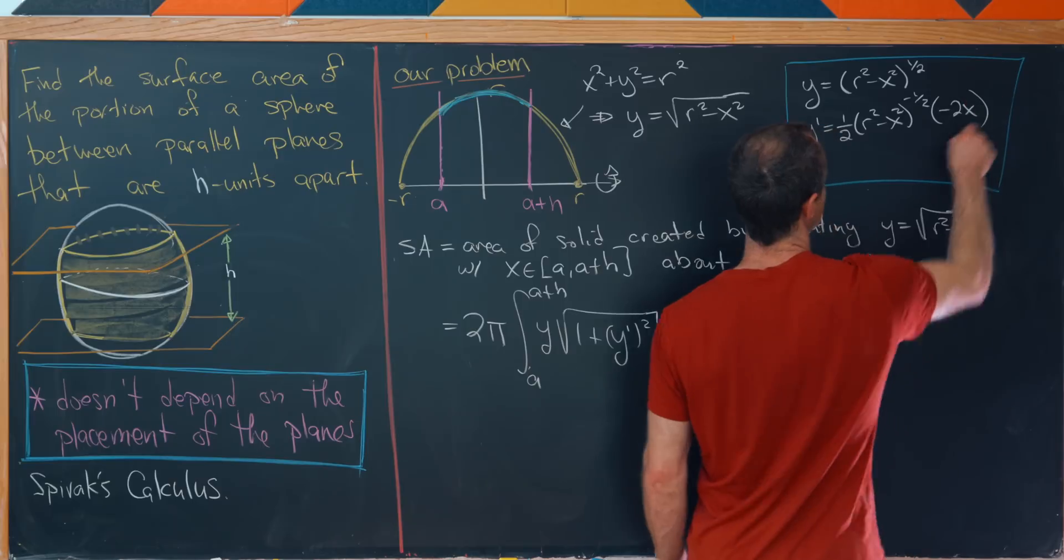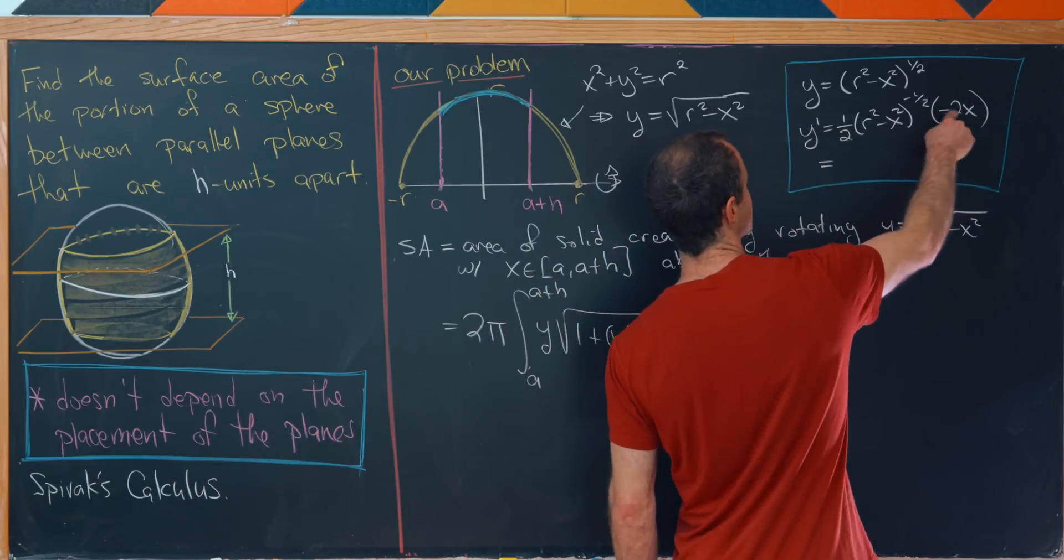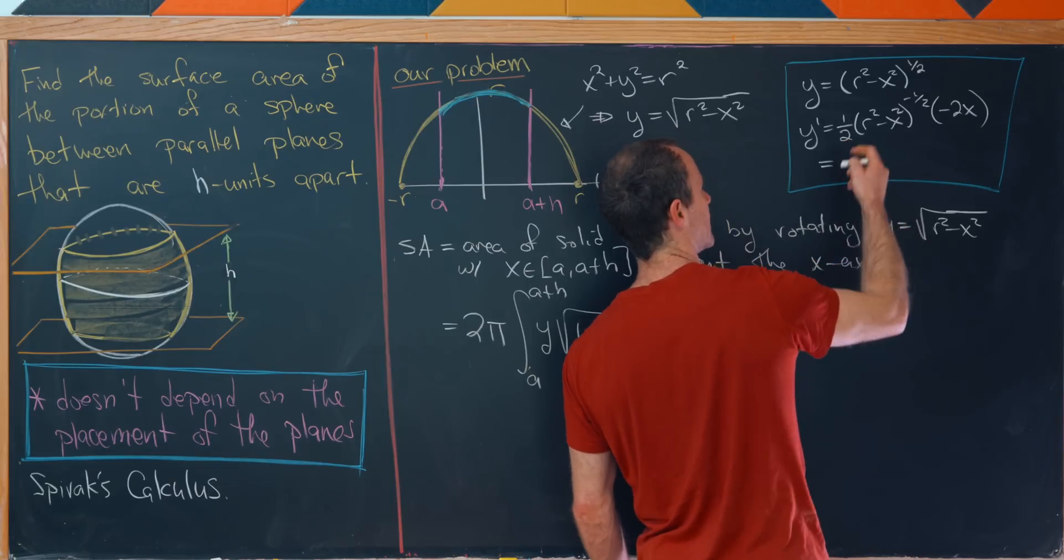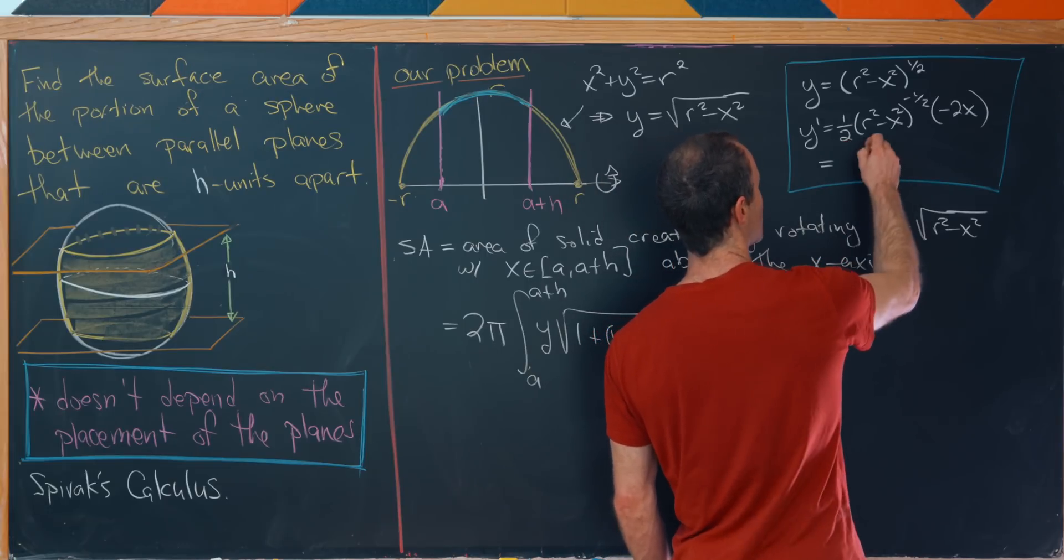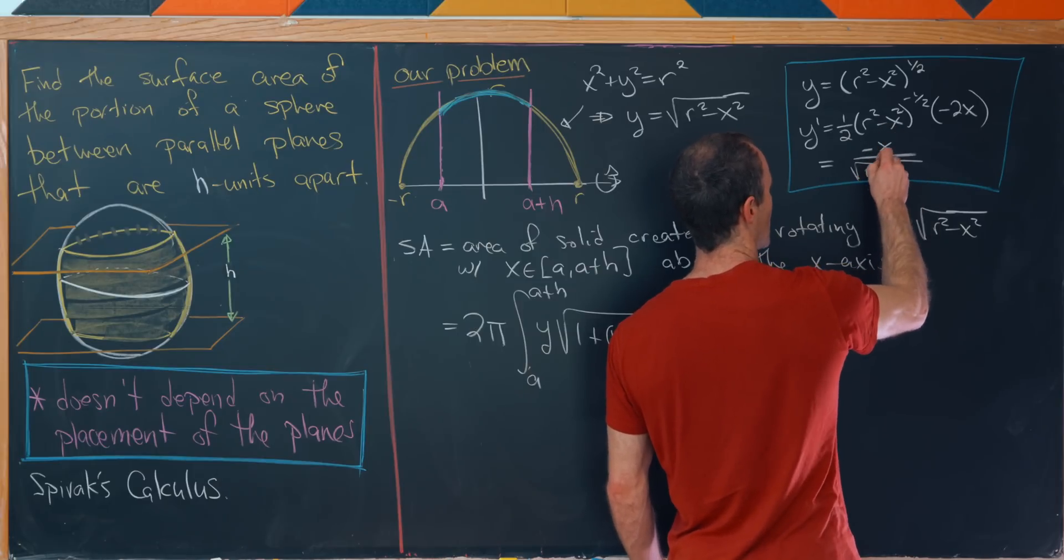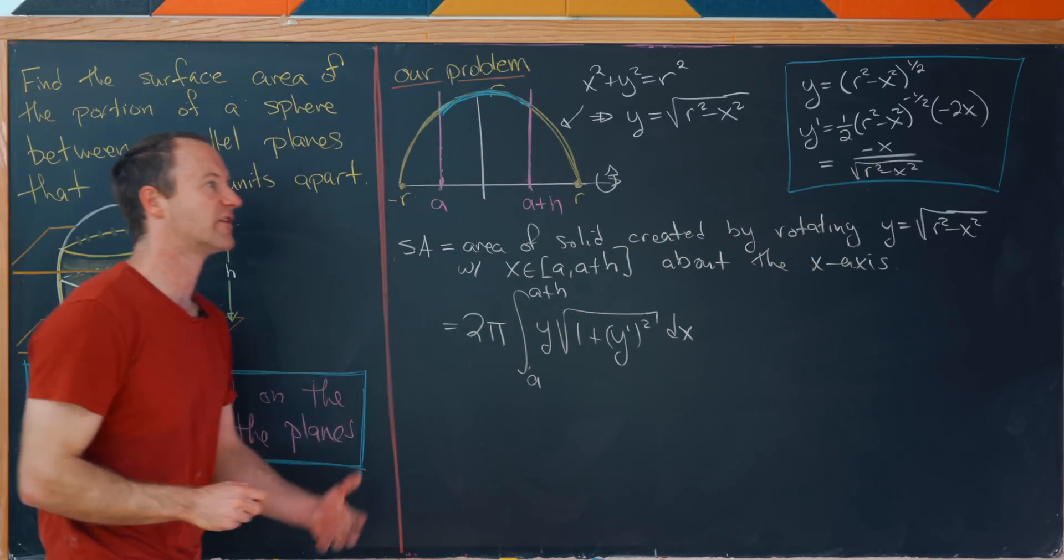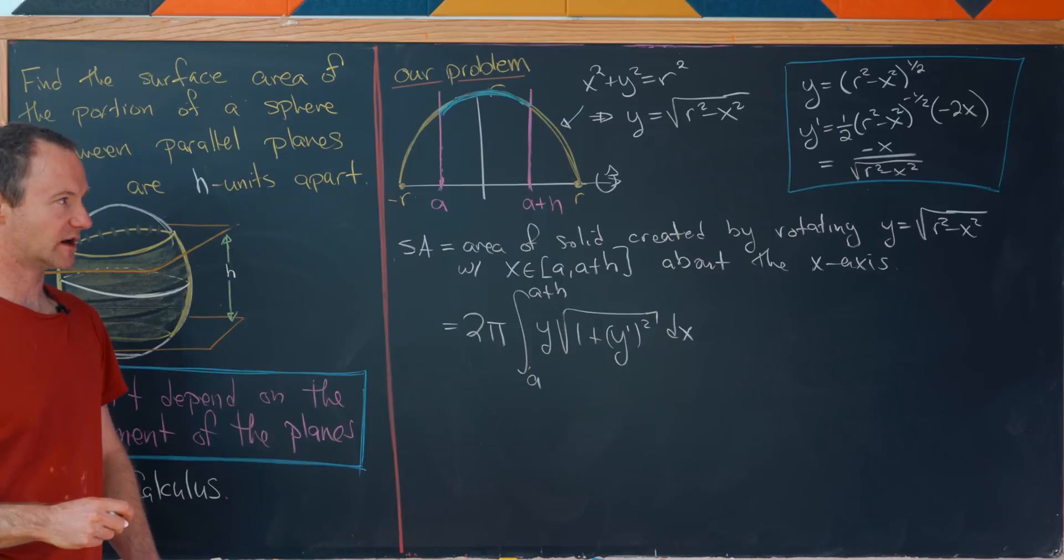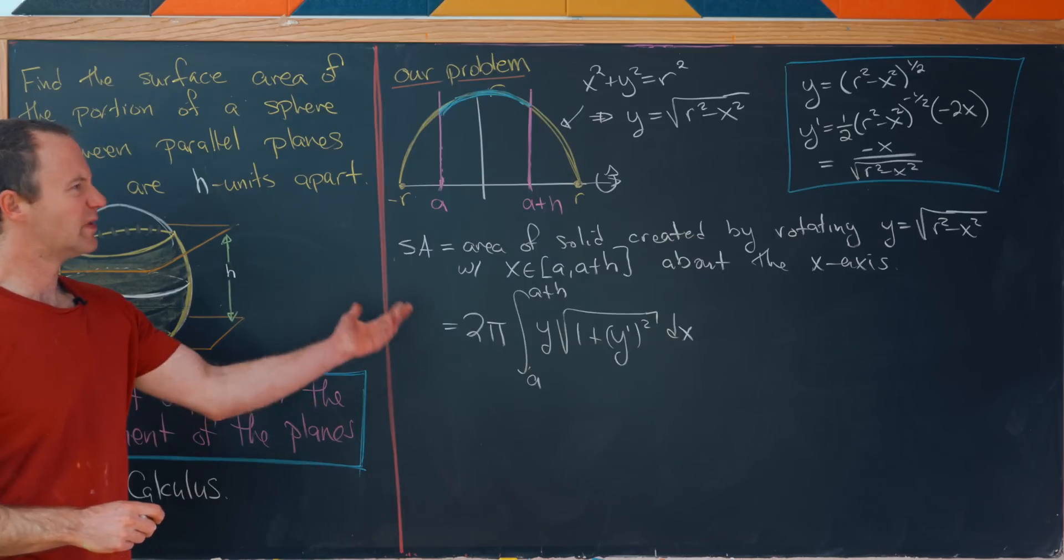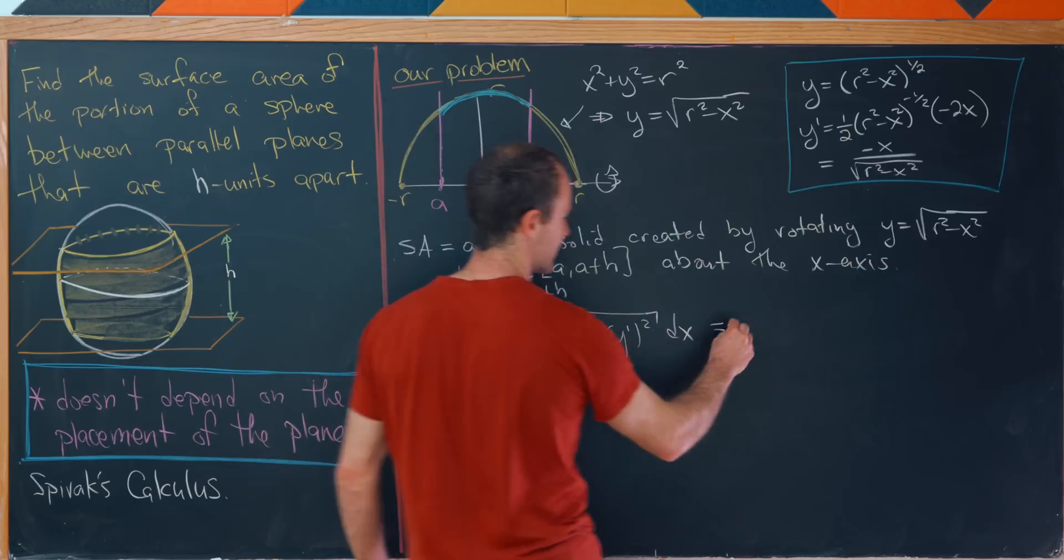So we'll have y prime is equal to 1 half r squared minus x squared to the negative half times negative 2x using the chain rule. So that means in the end, the 2 and the 2 will cancel. One's in the numerator and one's in the denominator. And that leaves us with negative x over the square root of r squared minus x squared, keeping in mind that that negative half power is a square root in the denominator. But now squaring that will be easy just to write in.